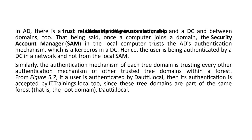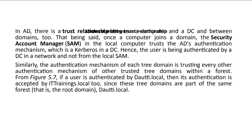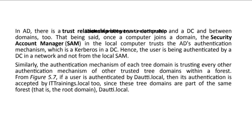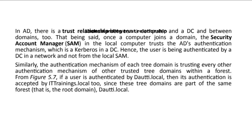First you create the domain, then you configure your computer to join the domain. Once your computer joins the domain, it is part of the domain. The security account manager in the local computer will trust the Active Directory authentication mechanism which the domain controller has — in Kerberos, on the domain controller. The user is authenticated by a DC in a network and not from the local SAM. SAM will authenticate when you log in and you're not connected to a network. Once you join the domain, your computer trusts the domain. The domain gives you a new username and password to access the domain and your computer. You need trust enabled in order to be able to join.